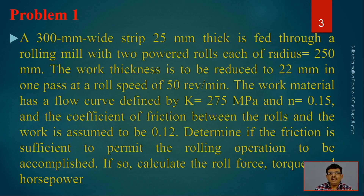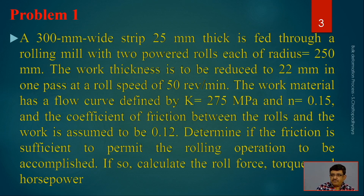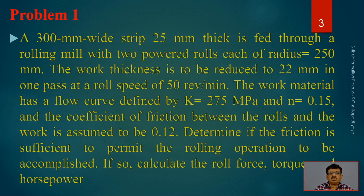The work material has a flow curve defined by the equation f = K·εⁿ, where K = 275 MPa and the strain hardening exponent n = 0.15. The coefficient of friction between the rolls and the work is assumed to be 0.12. We must determine: (1) if the friction is sufficient to permit the rolling operation, and if so, (2) the roll force, torque, and horsepower.